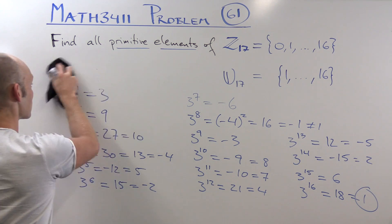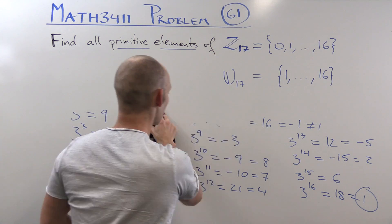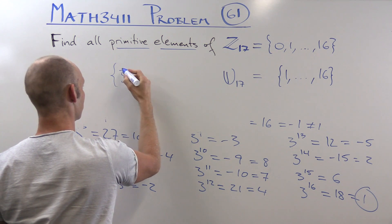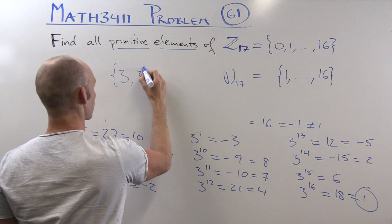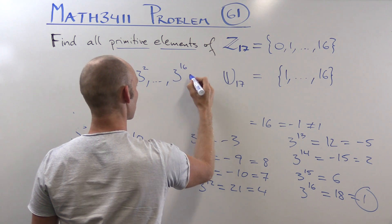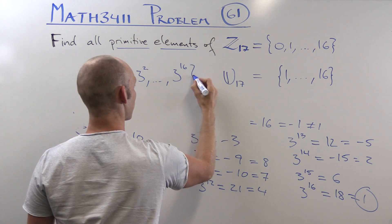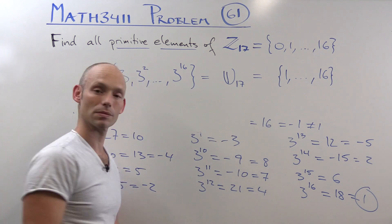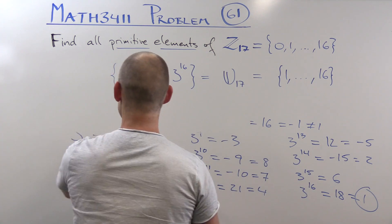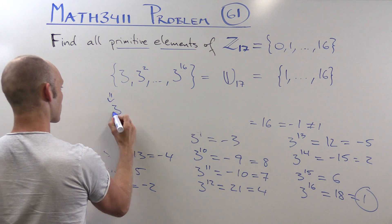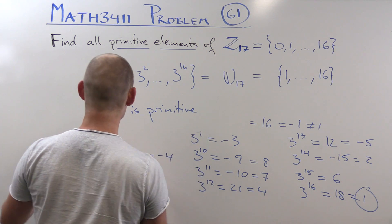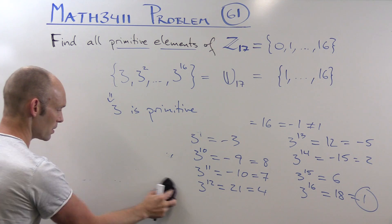Now we've come through all of these powers without repeating any of the numbers, and we're back to 1 at the very end — at the 16th power. So we've got all 16 values, and therefore 3 is primitive. The powers of 3 — that is, 3, 3 squared, and so on up to 3 to the power of 16 — give us exactly this set of units. So we've found a primitive element. Now we have to find the rest.